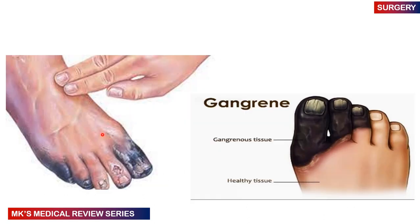Here is a picture of what gangrene looks like. As you can see, this toe is appearing darkish and discolored. These are both pictures of dry gangrene. You have gangrenous tissue, healthy tissue, and you can see the demarcation line in between the two.